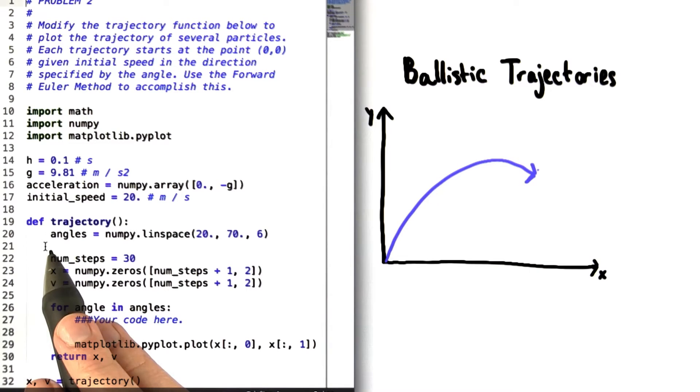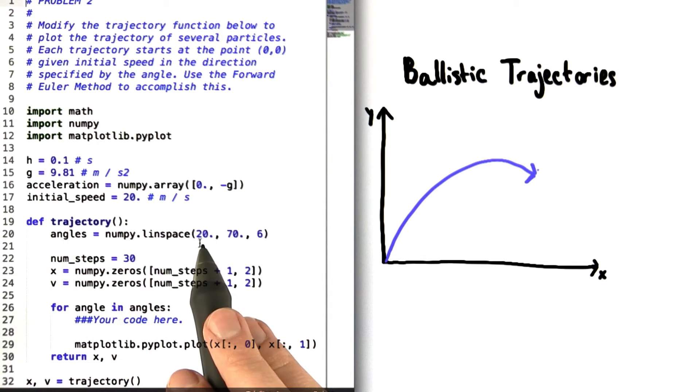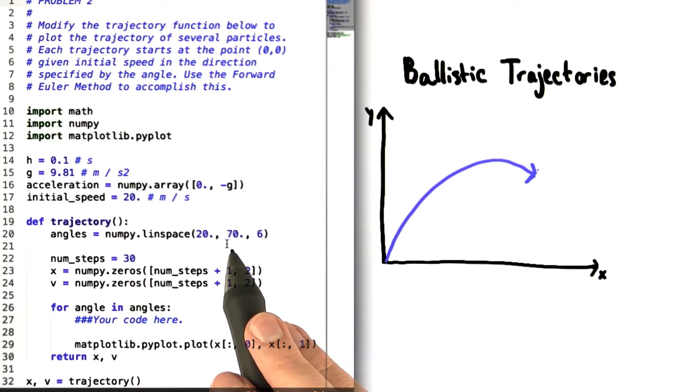Inside the definition, we've created an array called angles that starts out at 20 and increases with increments of 10 up to 70. This creates a set of angles at which the particle can take off.